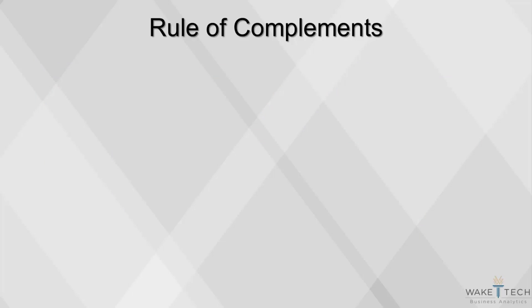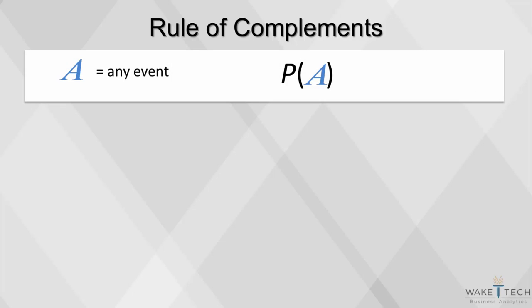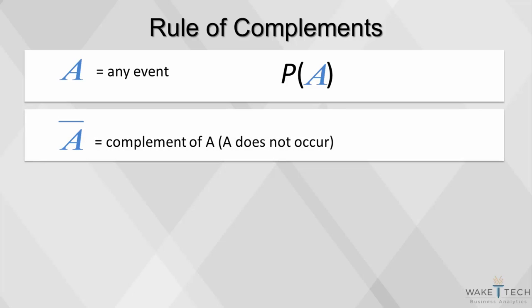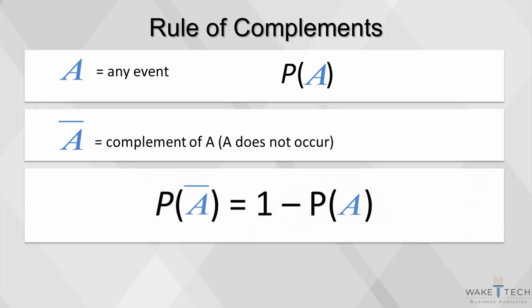The complementary rule in probability is simply the probability of an event not occurring. If A is any event, the probability of A is P(A). The complement of A is the event that A does not occur. The probability of the complement of A is shown by this equation: 1 minus the probability of the event occurring.